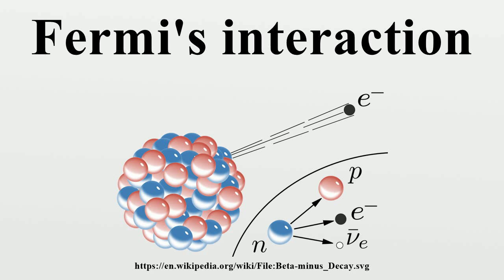The interaction could also explain muon decay via a coupling of a muon, electron-antineutrino, muon-neutrino, and electron, with the same fundamental strength of the interaction. This hypothesis was put forward by Gershtein and Zeldovich and is known as the vector current conservation hypothesis. Fermi's 4-Fermion theory describes the weak interaction remarkably well.